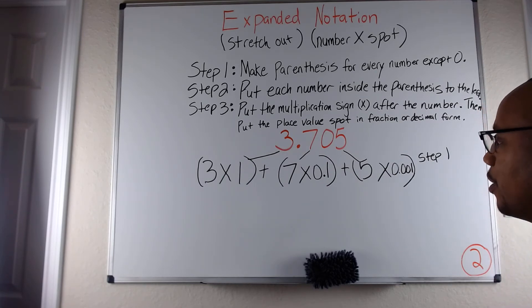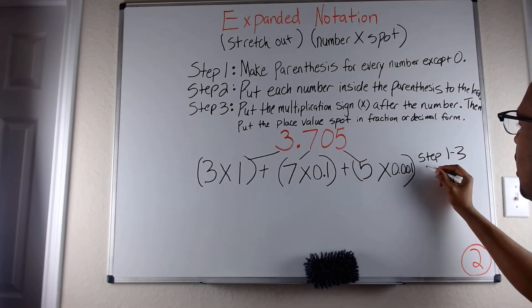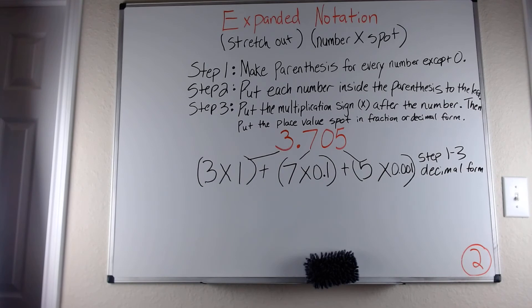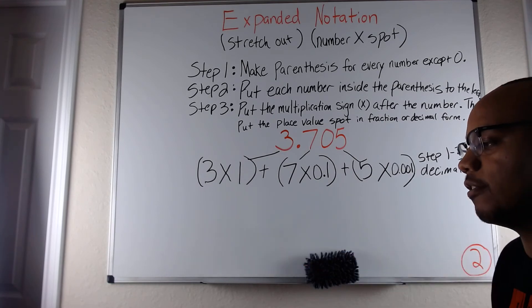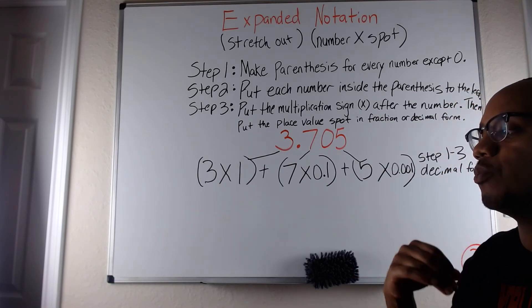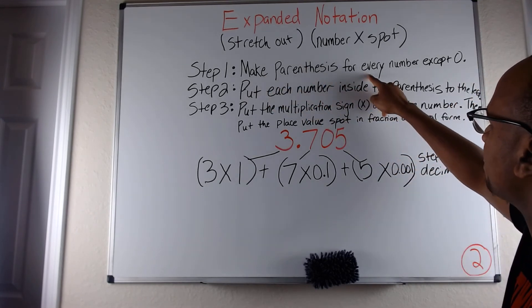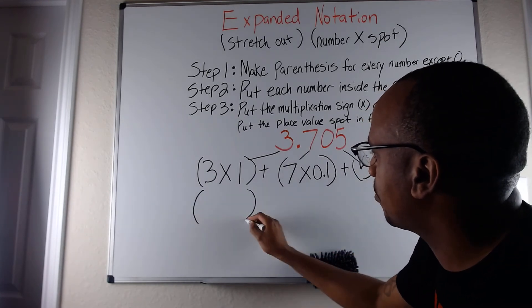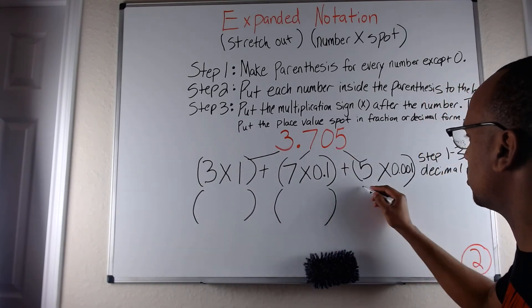That is the decimal version of expanded notation — step one through three in decimal form. Now I'm going to do the same problem again in the fraction version. Sometimes you will see the decimal version and sometimes the fraction version. Step one: make parentheses for every number except zero, so three gets a parenthesis, seven gets a parenthesis, zero does not, and five gets a parenthesis.